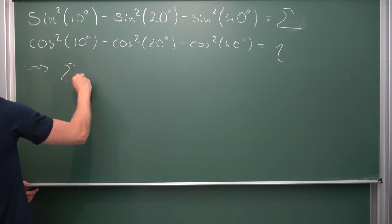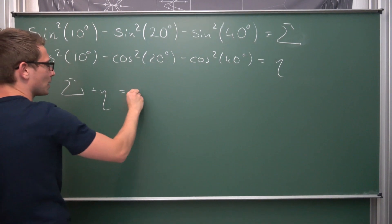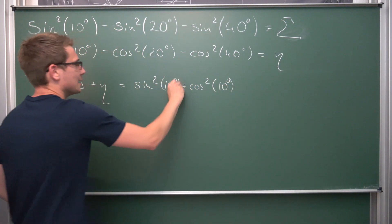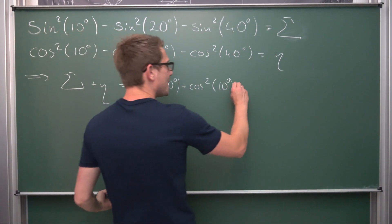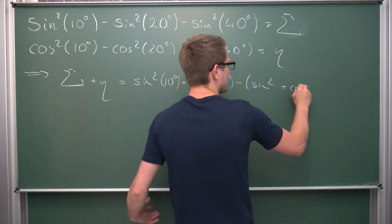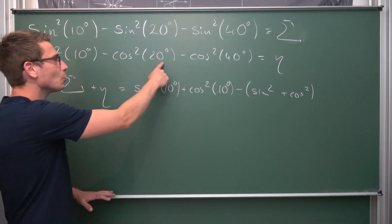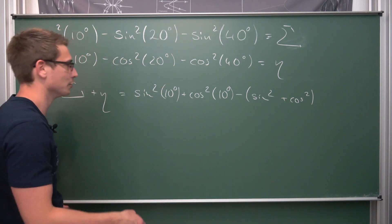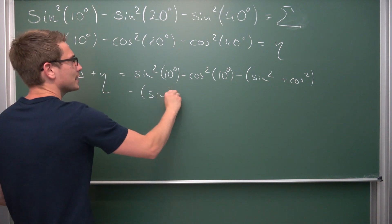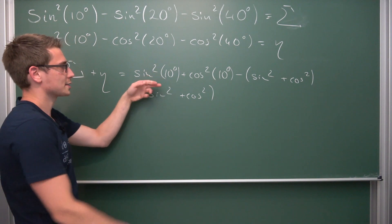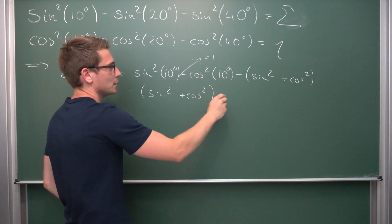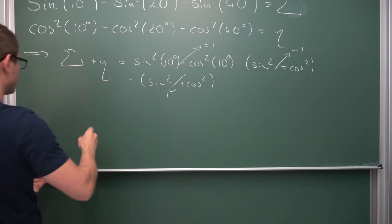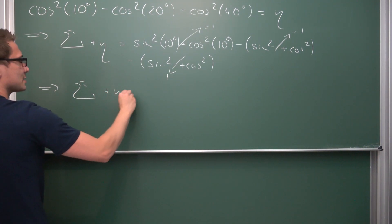Now we are going to add these two equations up. Adding them gives sigma plus eta equal to: sine squared of 10 degrees plus cosine squared of 10 degrees, then negative parentheses sine squared plus cosine squared of 20 degrees, then negative sine squared plus cosine squared of 40 degrees. Since these all have the same arguments, we can use the Pythagorean identity — sine squared plus cosine squared equals one. So we get one minus one minus one, giving us sigma plus eta equals negative one.